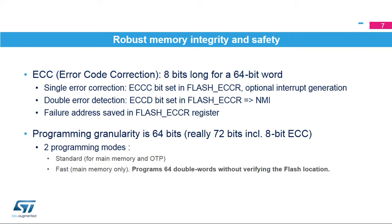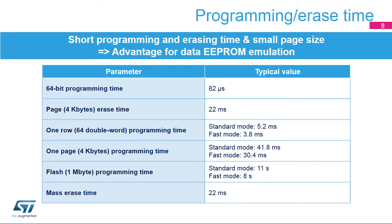The programming granularity is 64 bits, or 72 bits with the 8-bit ECC. There are two programming modes: standard mode for the main memory and OTP, and fast mode for the main memory only. In standard mode, the flash memory checks that the double word is erased before launching the programming. In fast mode, 64 double words are programmed without verifying the flash location. The flash memory programming time is only 82 microseconds for 64-bit double words.